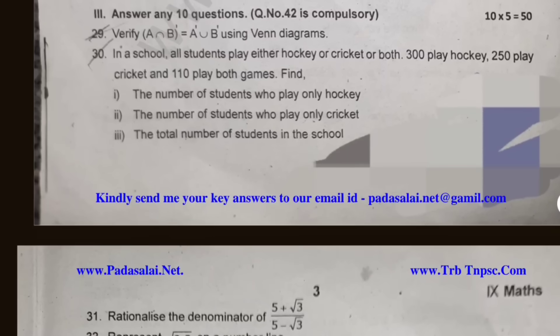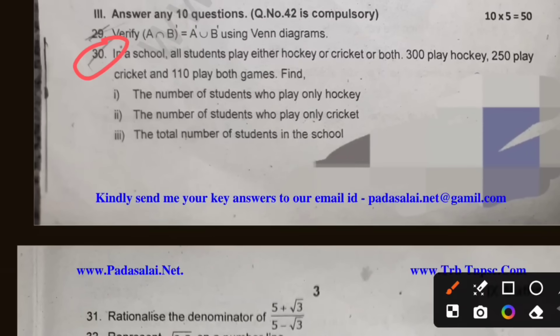The 5-mark question is worth 20 degrees. In school, all students play either hockey or cricket or both — this is the Venn diagram problem to solve.